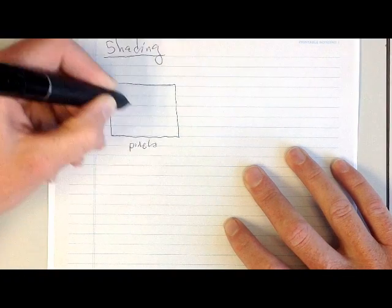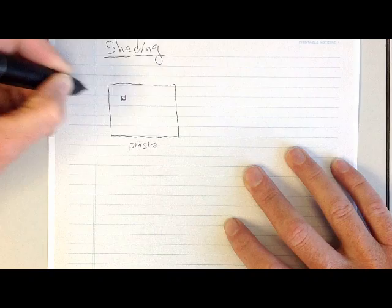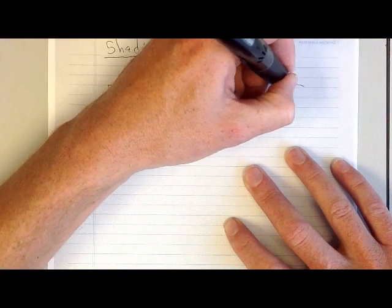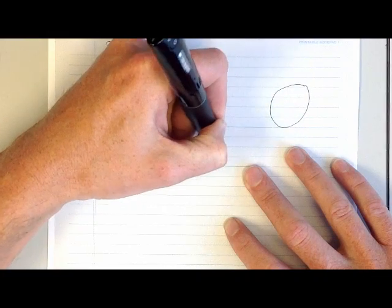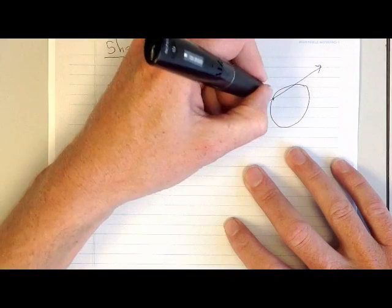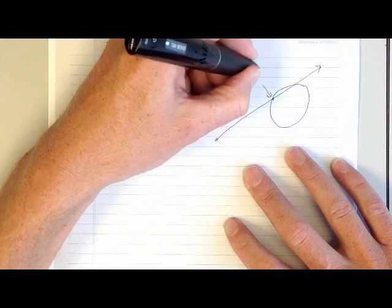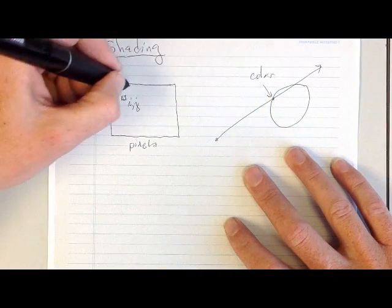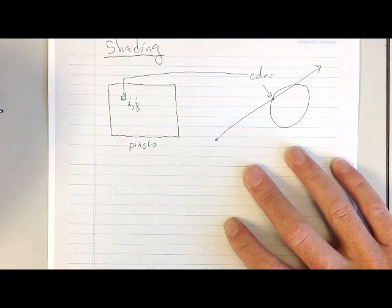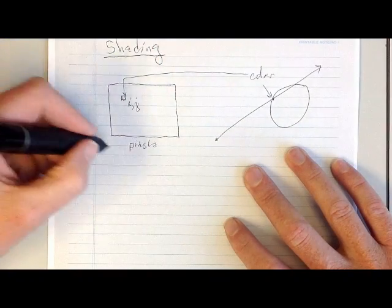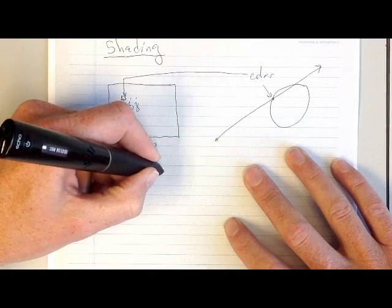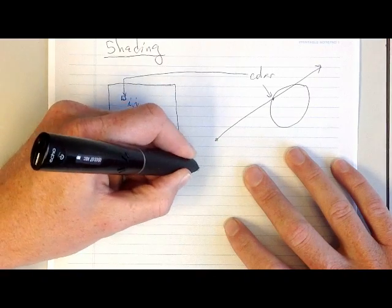There are two things to keep in mind here. One is that we have a screen, and the screen is full of pixels. Let's say we shot a ray through a pixel, which I'll call I, J. And let's say that that ray had the good fortune to hit some sphere off in the world. Here's where it hit the sphere. What we need to figure out is the color of the sphere at that point, and then we'll take that color and color the pixel that same color.